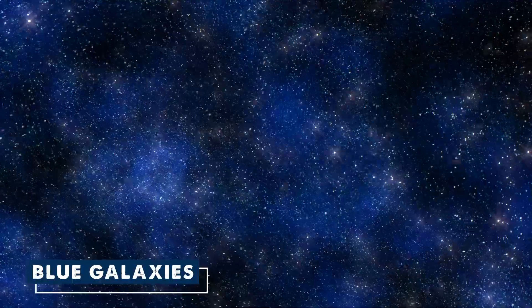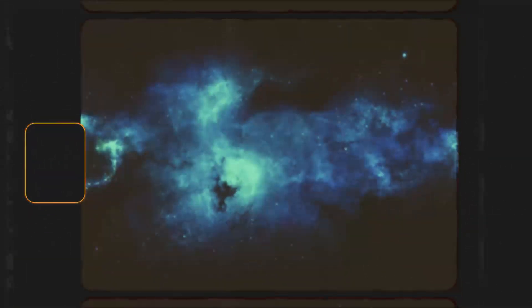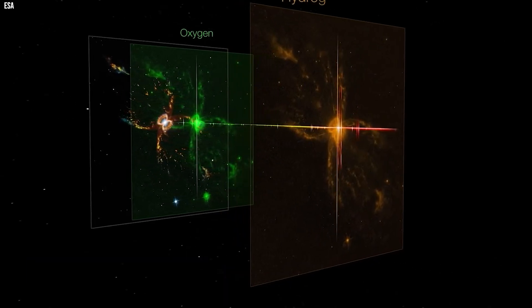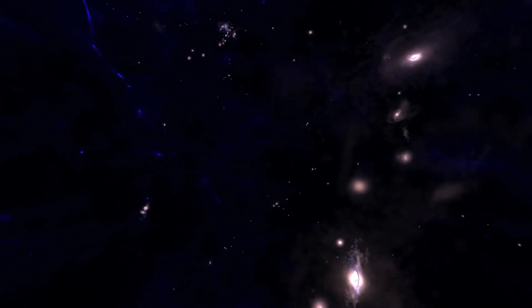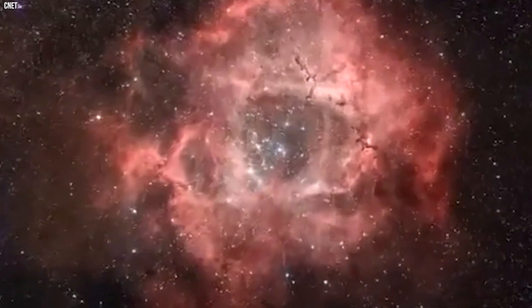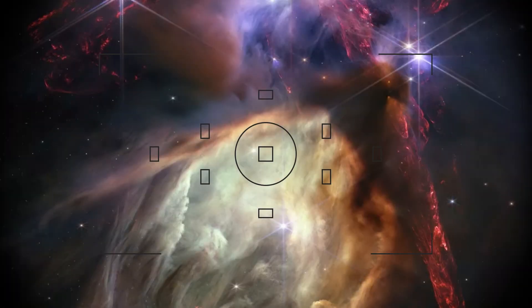Webb's MIRI camera also shows us a mix of colors, helping us find where there's dust. Dust is super important because it helps stars form, and that's a big deal for making life. Blue galaxies have lots of stars but not much dust. Red ones are hidden in thick layers of dust. Green galaxies have different chemicals like hydrocarbons. Scientists can use this info to learn how galaxies grow, change, and sometimes stop making new stars.